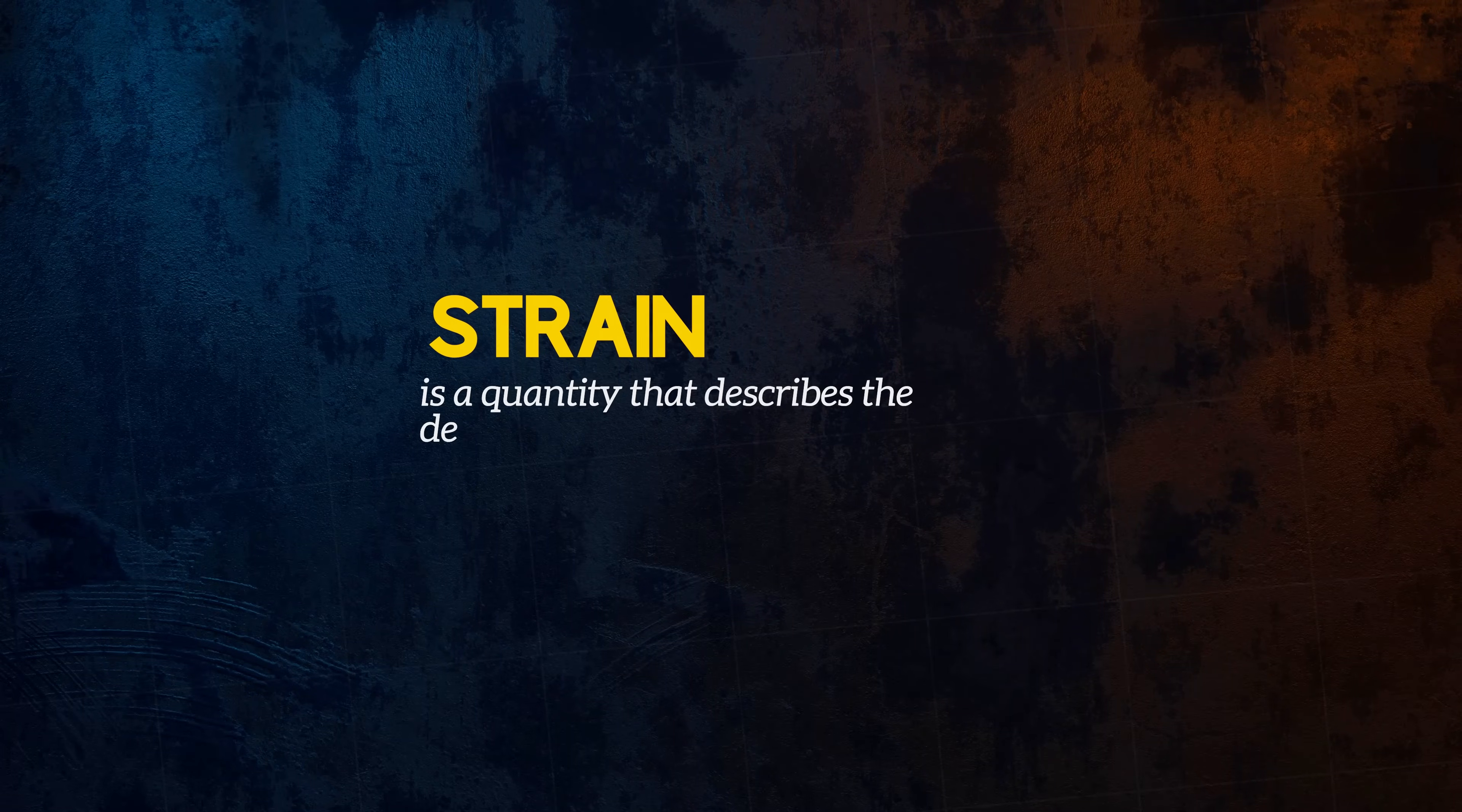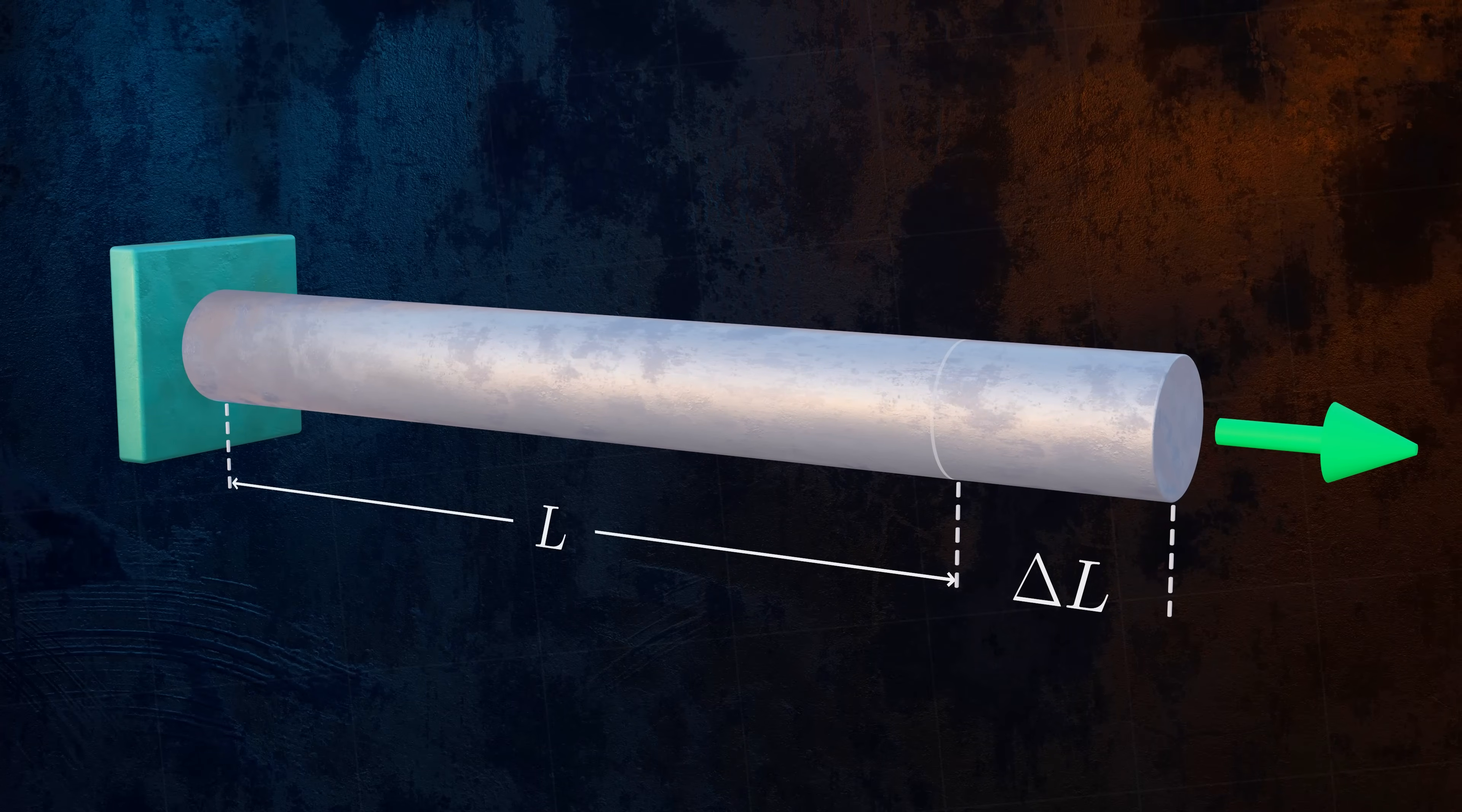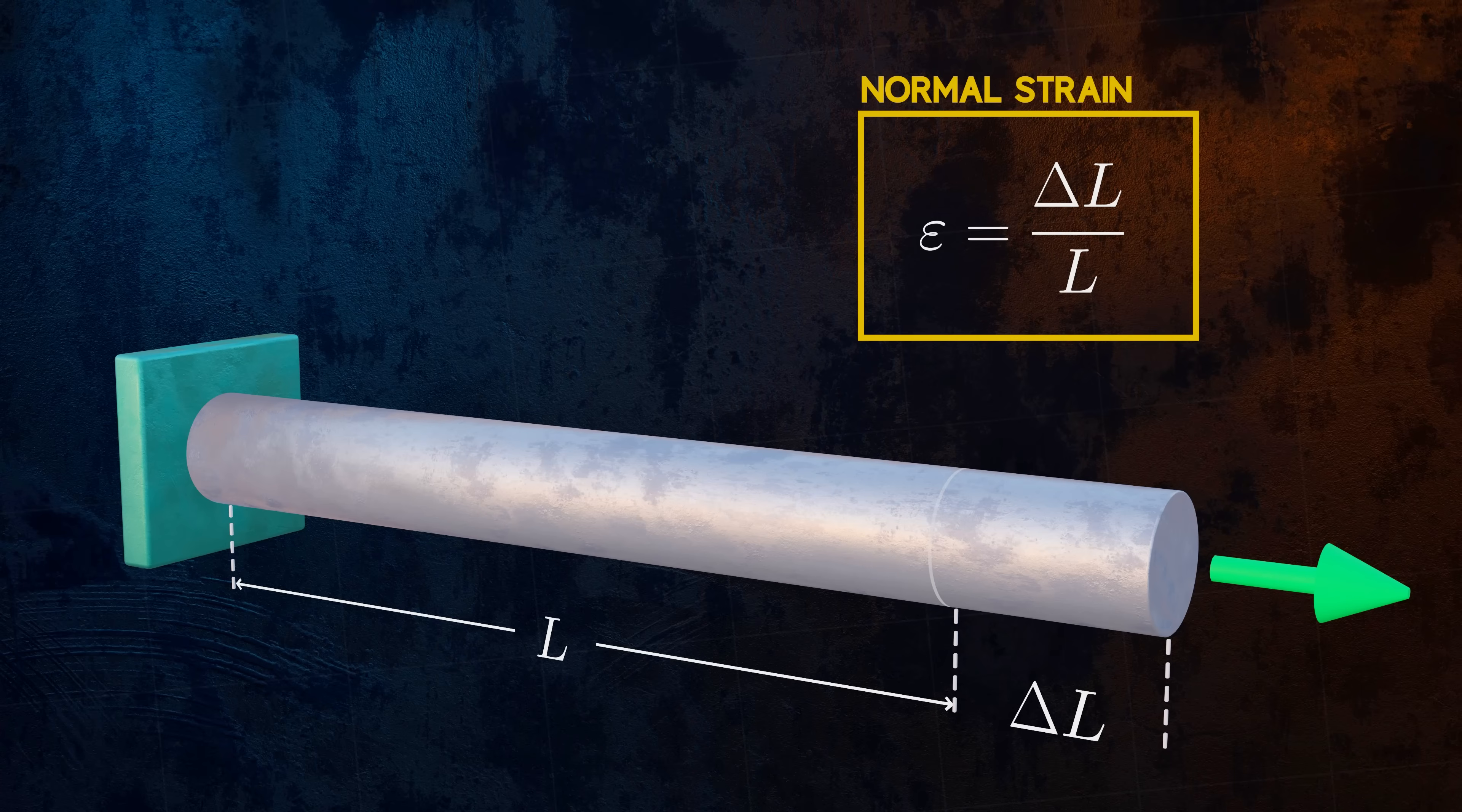Strain is a quantity that describes the deformations that occur within a body. If we fix our bar at one end and apply a force to the other end, the force will cause the bar to deform. The normal strain within our bar associated with this deformation can be calculated as the change in length of the bar delta L divided by the original length L. Strain is a non-dimensional quantity and is often expressed as a percentage. Normal strains can be tensile or compressive.